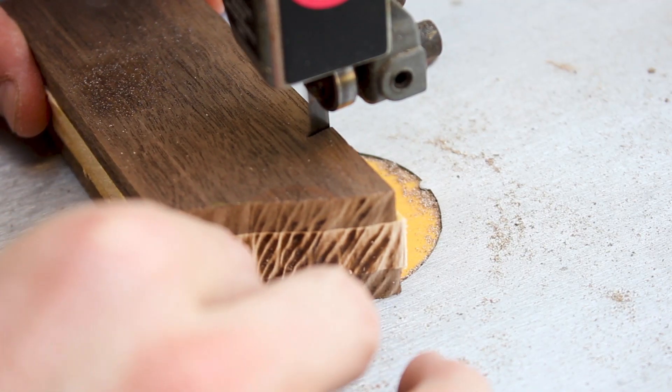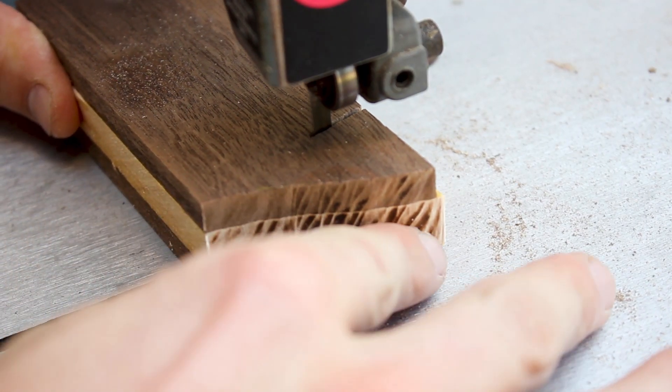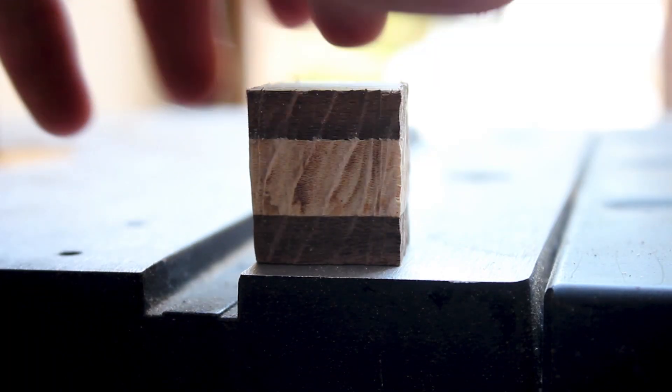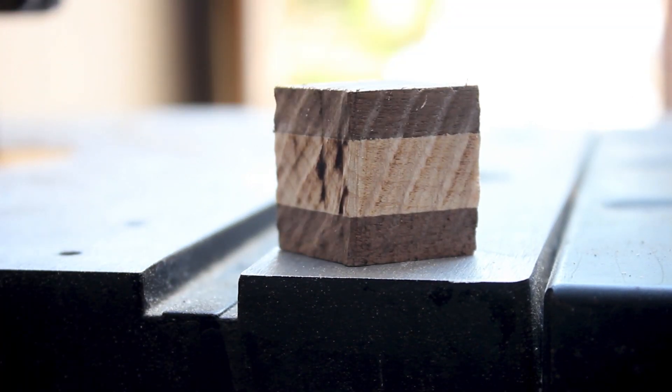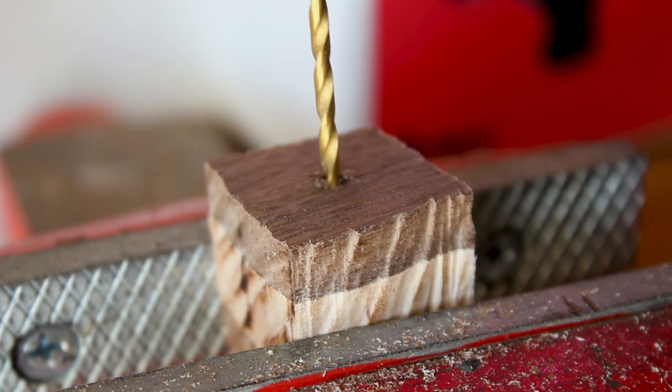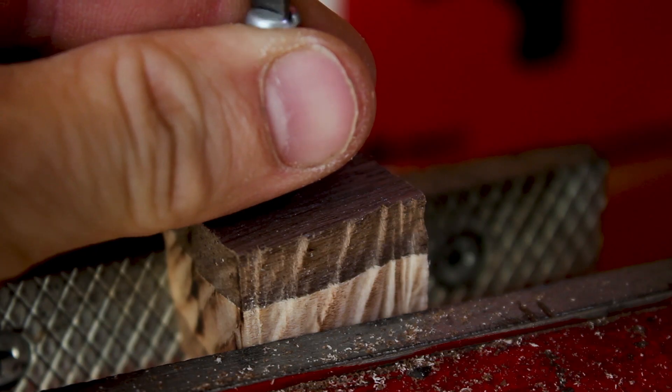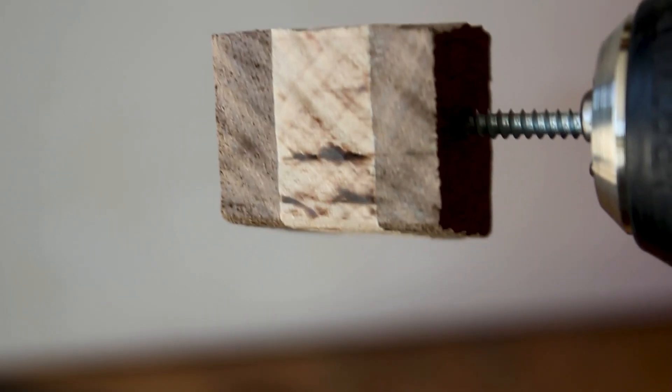Now I had no idea what I wanted to do with the lid, so I started out by cutting a small piece from the leftovers of my blank. I then drilled a hole and put a screw in it so that I could put it in my drill, and then I used my drill as a sort of makeshift lathe against my belt sander to round it out.